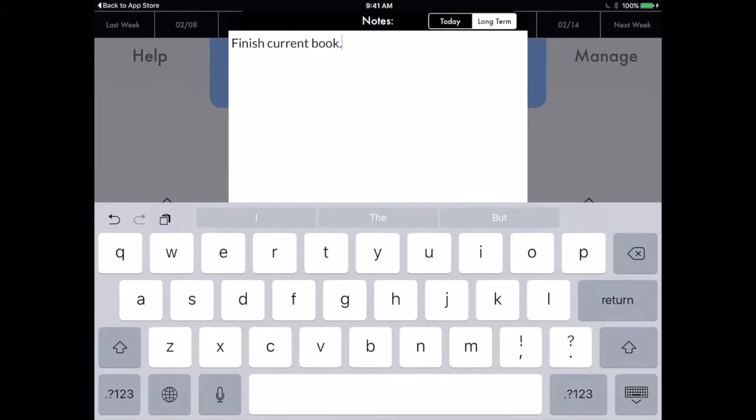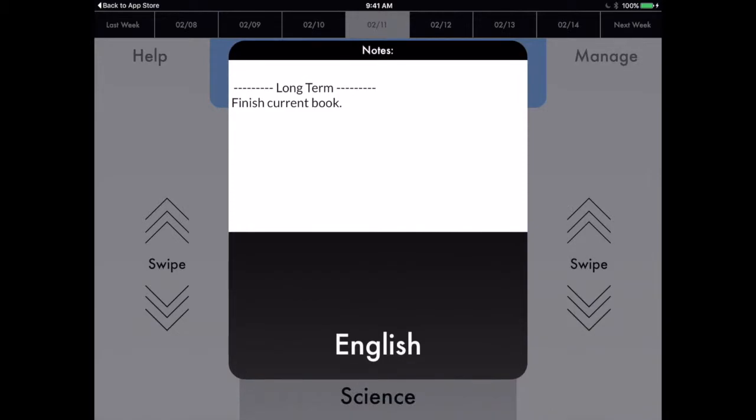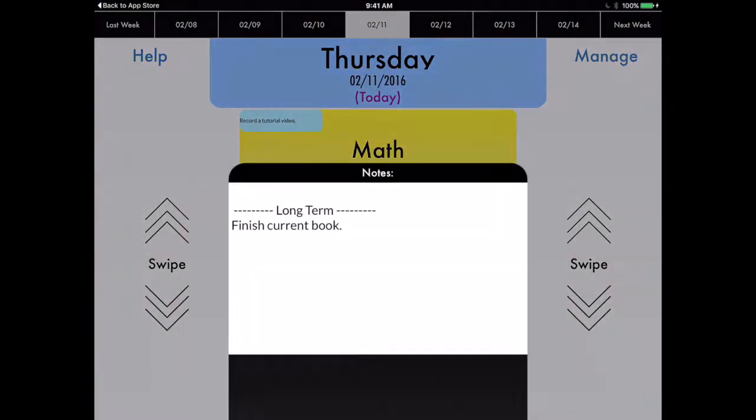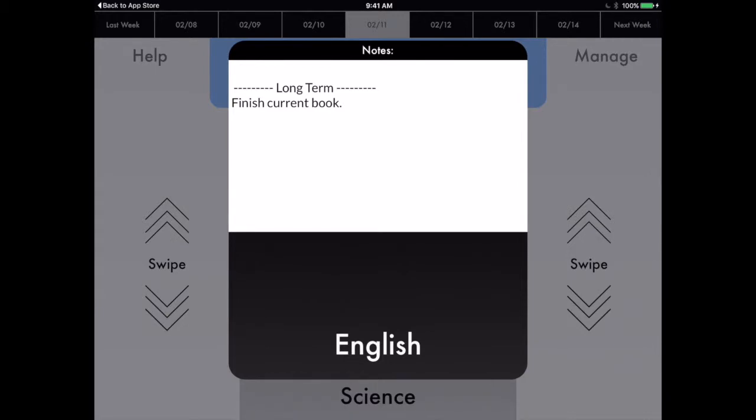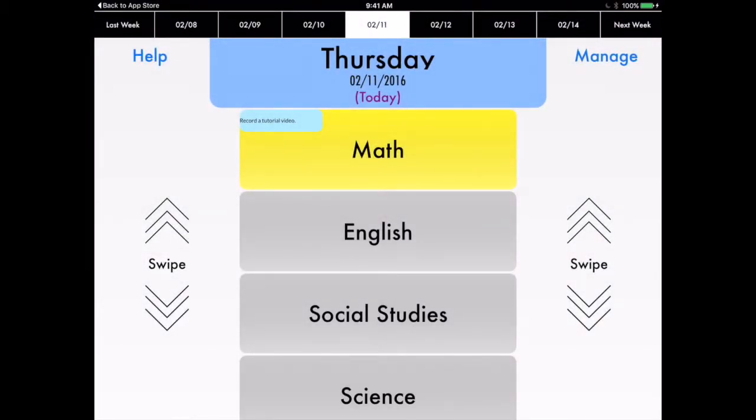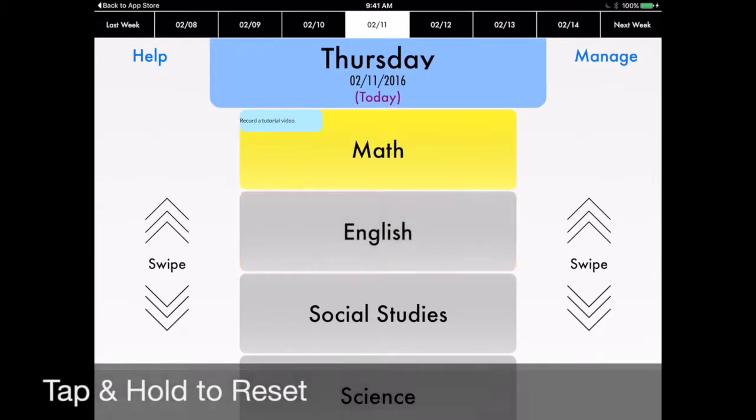Okay, so that's kind of a long-term thing I'm working on. So click out of there, bring it down. And now, any time that I pull up that English course, I'm going to see that, oh, I should be working on finishing that current book. You could go ahead and swipe left if you want to say that that's homework. Or you just tap and hold, and it's just going to reset it back to gray.